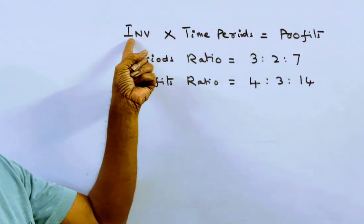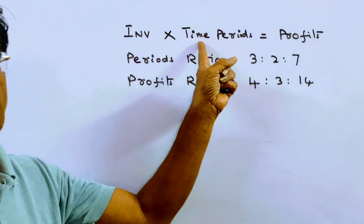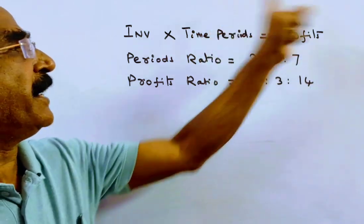It implies investments is equal to, investments ratio is equal to profits by time periods. Profits by time periods.